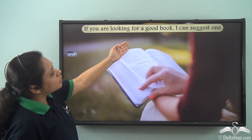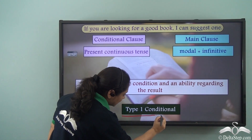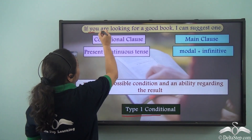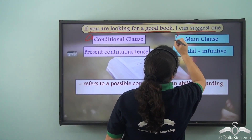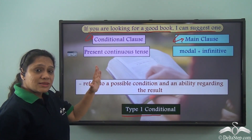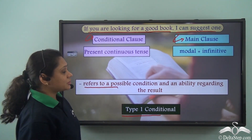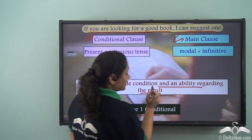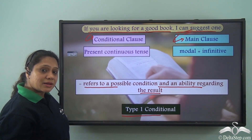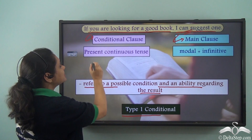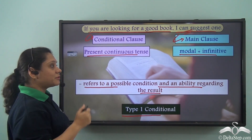'If you are looking for a good book, I can suggest one.' This is also a Type 1 conditional sentence. 'If you are looking for a good book' is the conditional clause and 'I can suggest one' is the main clause. It refers to a possible condition and an ability regarding the result — 'can suggest.' The conditional clause is in the present continuous tense and the main clause has a modal with a bare infinitive.